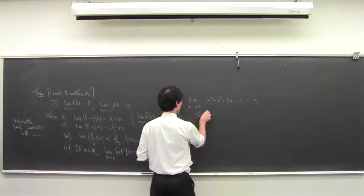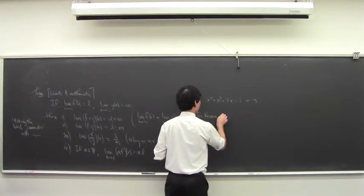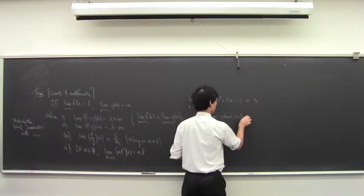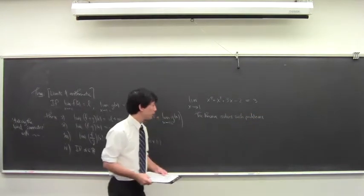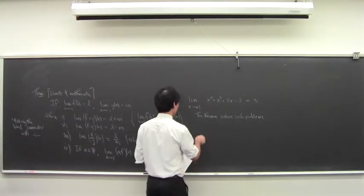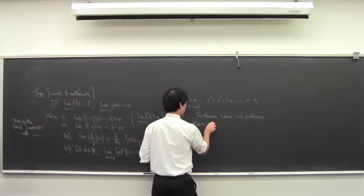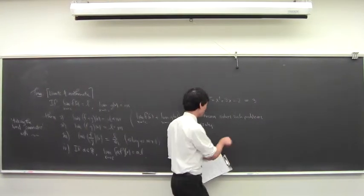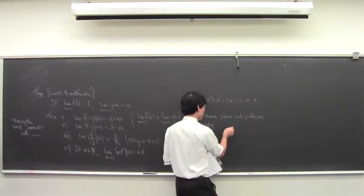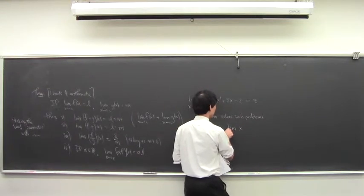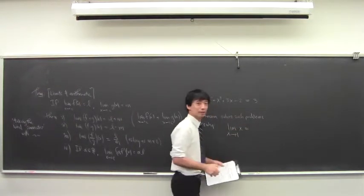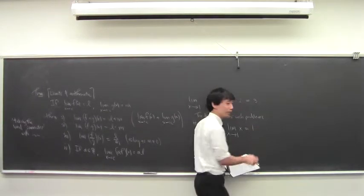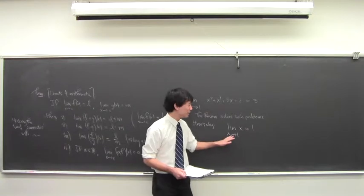Here's how. The theorem solves such problems. You start off with: if I take the limit of x as x approaches 1, what's that? The limit of x as x approaches 1 is going to be 1. You can prove that using epsilons and deltas, but it'll be easy to do. More generally, the limit of x as x approaches c is just going to be c for some constant.